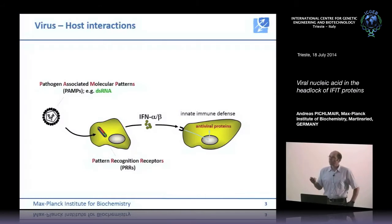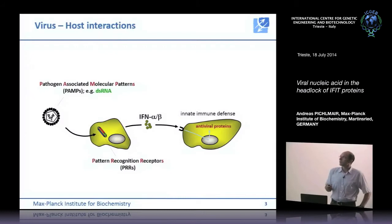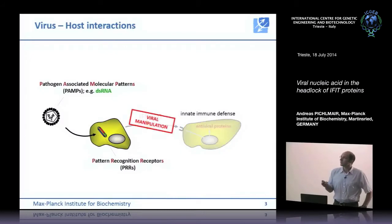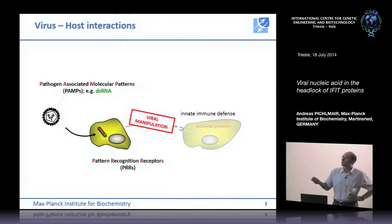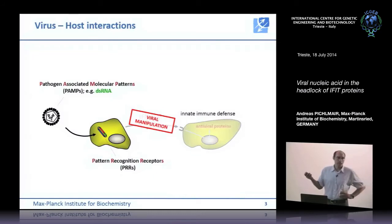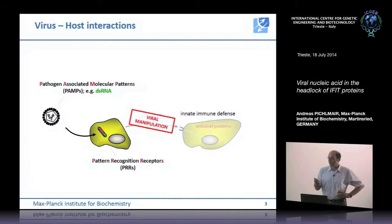Since most viruses have co-evolved with humans, all viruses that successfully infect us somehow manage to inhibit this system. Most viruses manipulate either the induction of type 1 interferon or the activity of antiviral proteins, and only if viruses can do that are they pathogenic in mammalian systems.